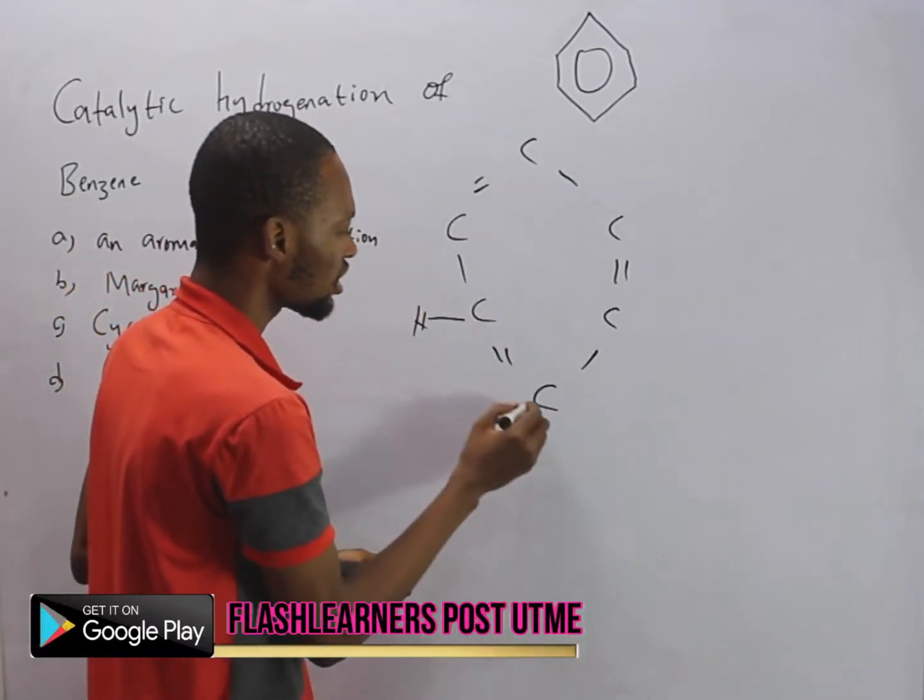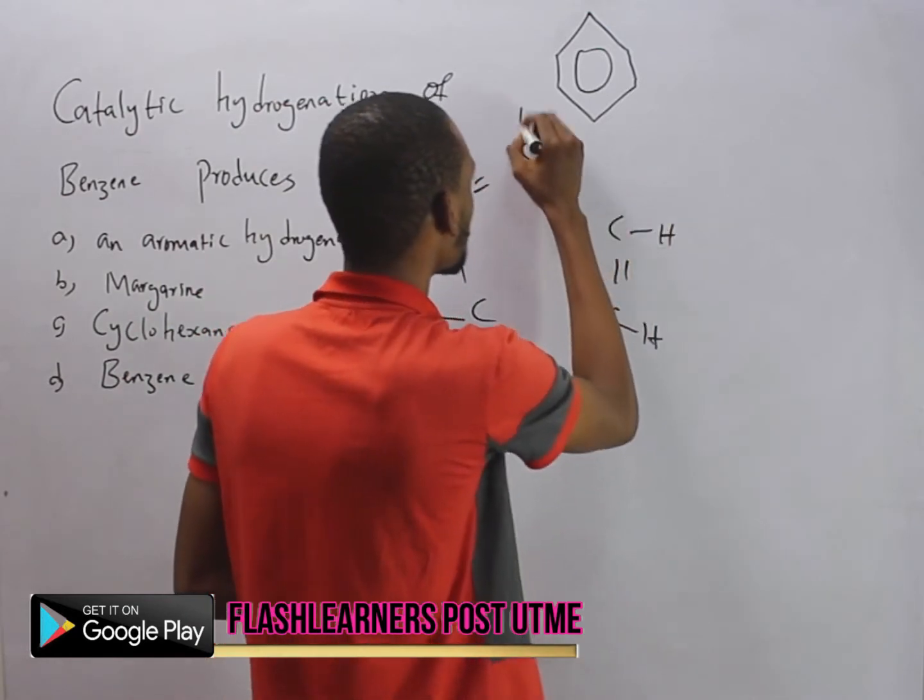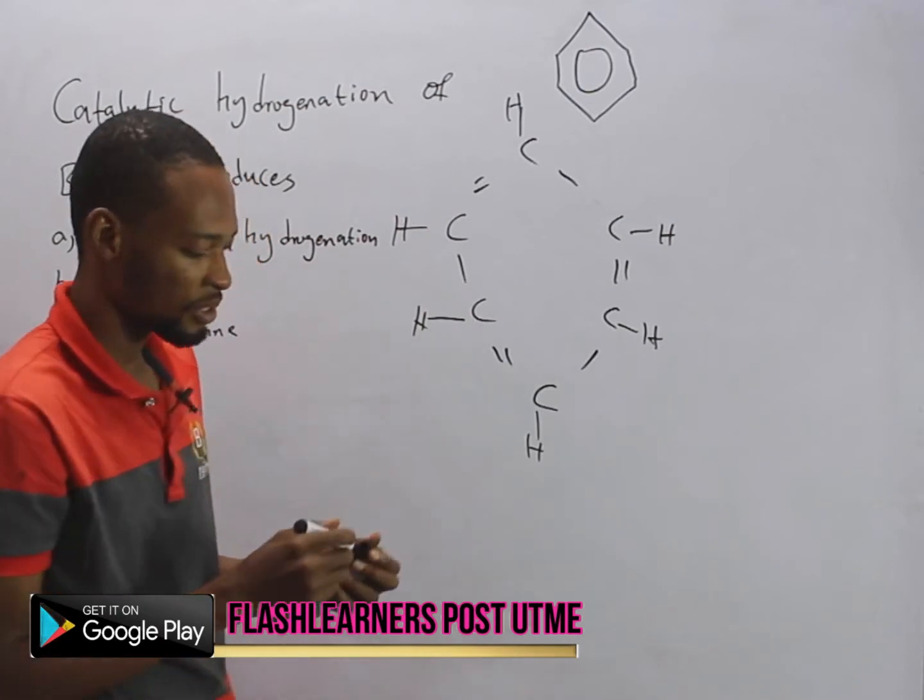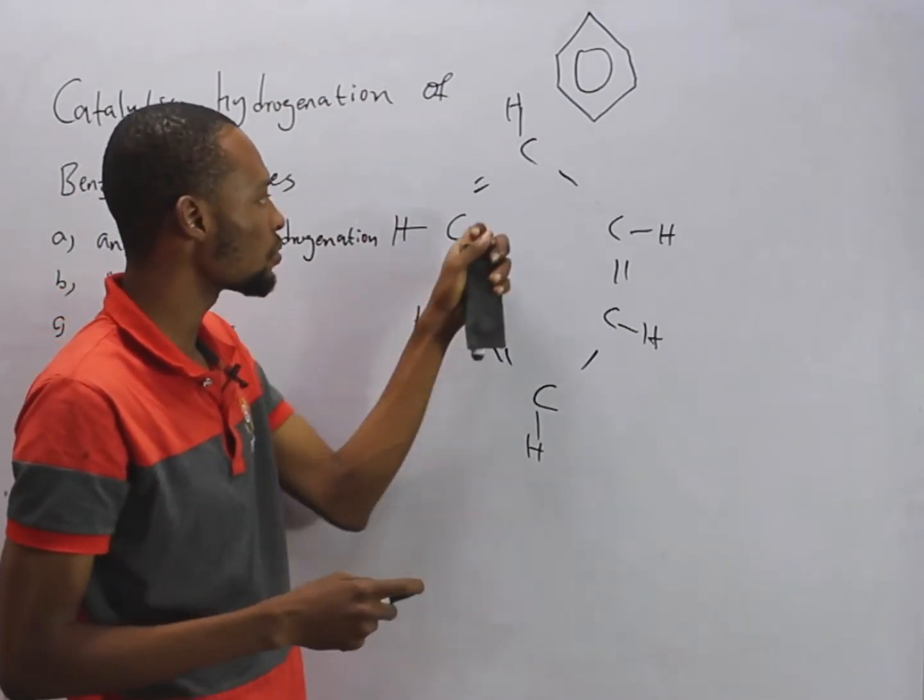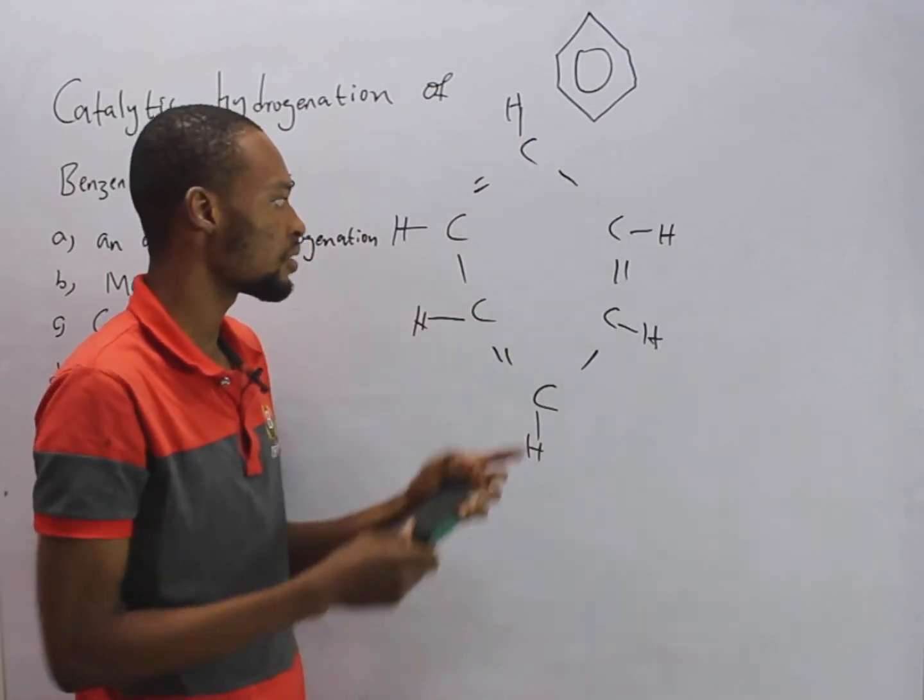Now, the remaining are hydrogen, H. And remember that carbon is tetravalent. It can carry 4 electrons. So 1, 2, 3, 4. 1, 2, 3, 4. So it's complete.